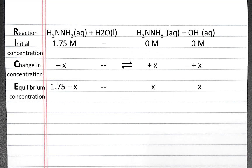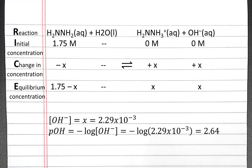So now that we've calculated x, we know the hydroxide concentration. So to calculate pOH, we can take the negative log of the hydroxide concentration, which is 2.64.